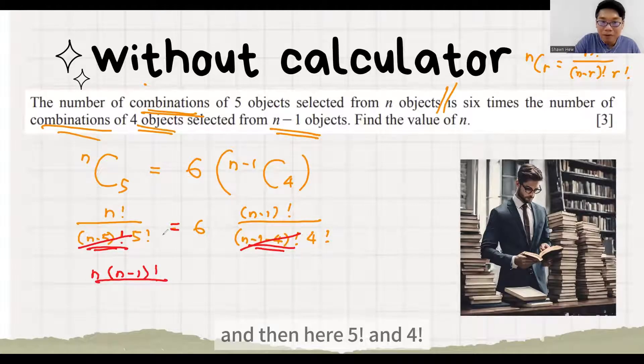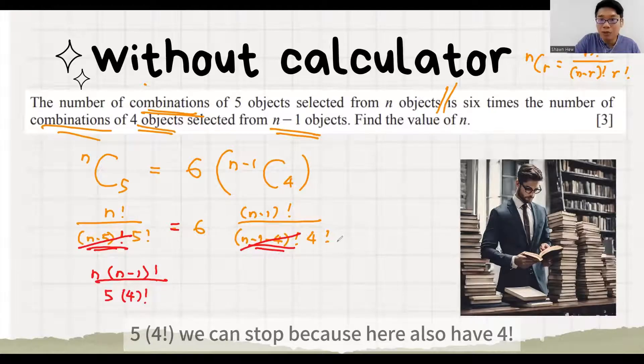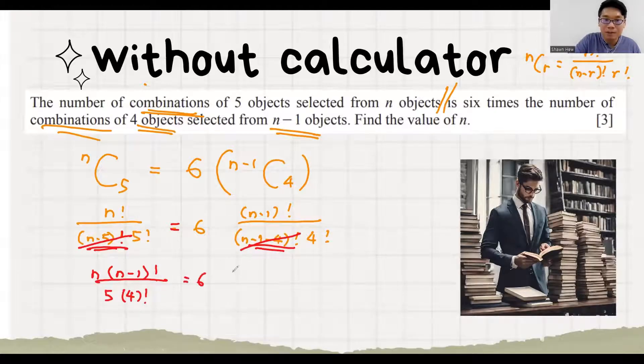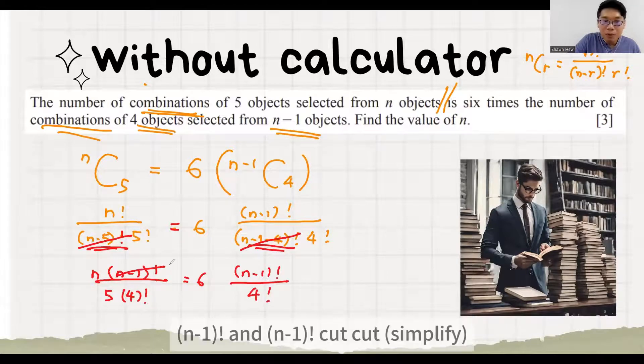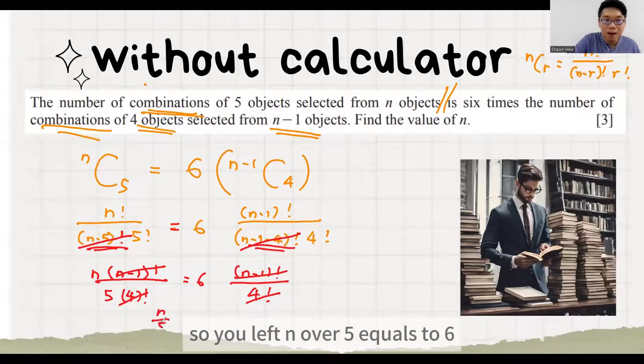And then here, 5 factorial and 4 factorial. 5 is larger. So we also modify this 5 factorial. This 5 factorial becomes 5 times 4 factorial. We can stop because here also have 4 factorial. Then we can simplify. n minus 1 factorial, n minus 1 factorial, cut. This 4 factorial and this 4 factorial also you can remove. So we left n over 5 equals to 6. n equals to 30.